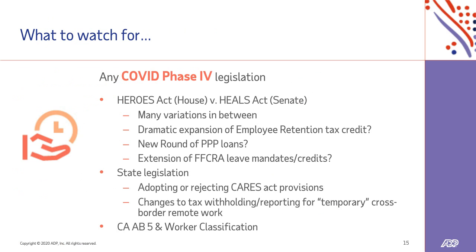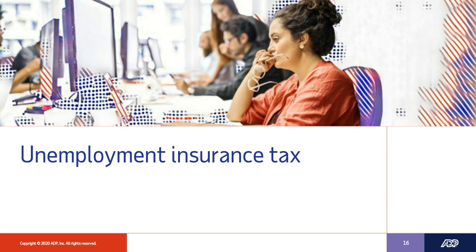We're still expecting COVID phase four legislation, and at this point we expect it will probably come after the election — not much before then. We do expect a new round of PPP loans and possibly an extension of the FFCRA paid leave credits. There are many possibilities being tinkered with in Congress regarding what to do next in this COVID environment. With that, let me ask Tom Crowley to help us through the unemployment insurance tax provisions.